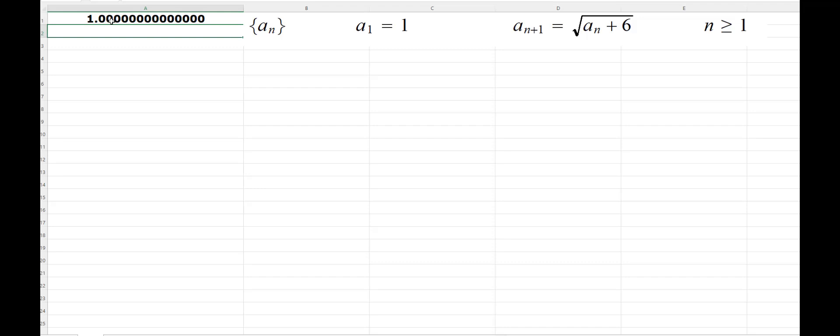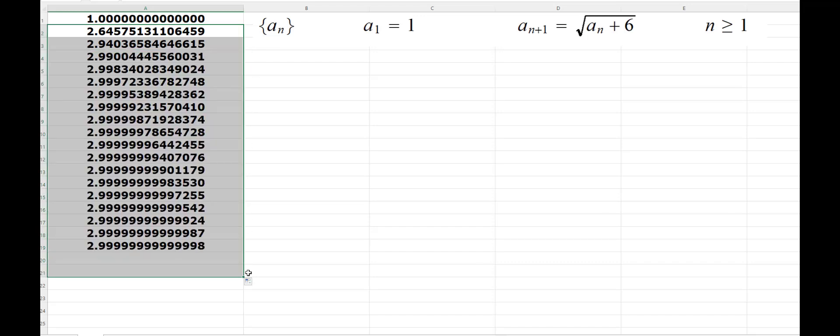So we have one here and then for these, the first term is one, that's what we wrote. And then for the subsequent terms, we have this recursive definition. So each term is a square root of six plus the previous term. So here we got this and this would be the same thing. I'm using Excel, take the previous term and add six to it. And after that, we may go ahead and say double click right here. Or just drag it down.